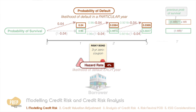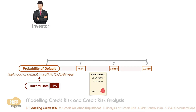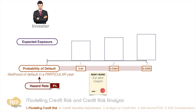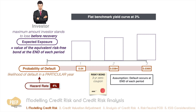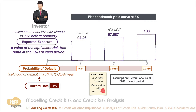For credit risk analysis we are more interested in the probability of default, which is different for each year. The expected exposure is the maximum amount the investor stands to lose before any recovery is factored in. Assuming default occurs at the end of each period, the expected exposure is the value of the equivalent risk-free bond at each period end. With a flat benchmark yield of three percent and a face value of 100, the exposures are 100 at year three, 97.087 at year two, and 94.26 at year one.